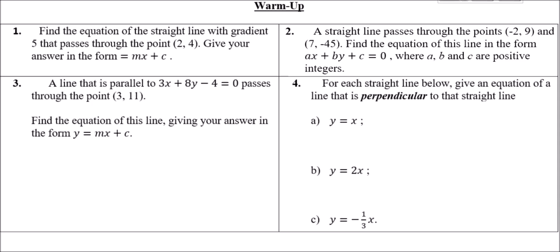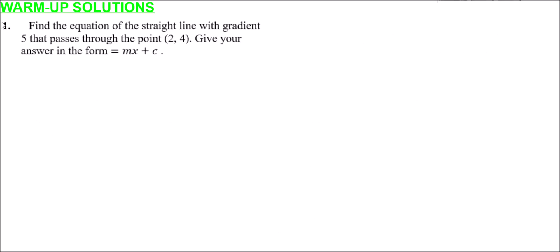Assuming you've done that, let's look at the solution to question one. We want to find the equation of a straight line with gradient five that passes through the point (2, 4), giving our answer in the standard form y = mx + c.